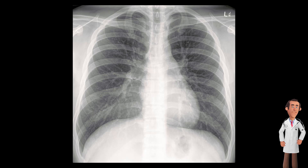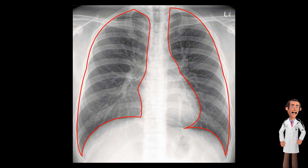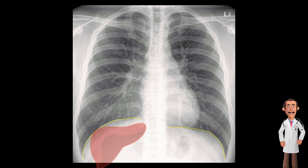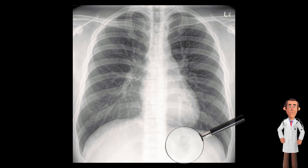When assessing the lungs, it is important to look at the surrounding pleura and both hemidiaphragms. These hemidiaphragms should have a curved shape and sharp costophrenic angles, with the right hemidiaphragm higher than the left due to the underlying liver. Occasionally, on the left, under the diaphragm, you can see a gastric bubble. This is a normal sign.